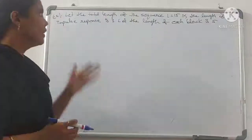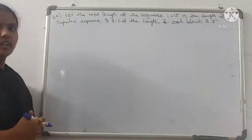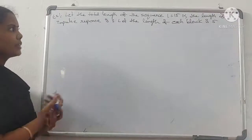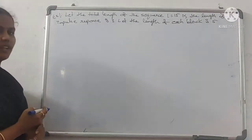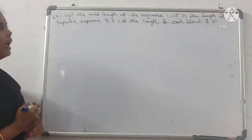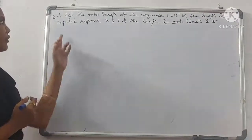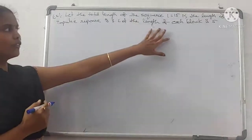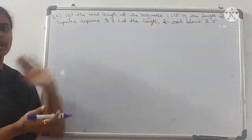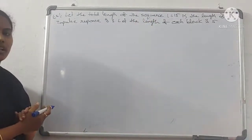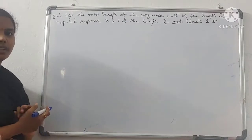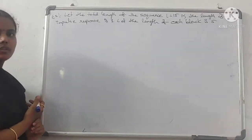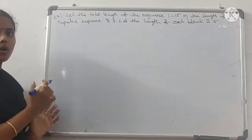Let the total length of the sequence L equal 15, and the length of the impulse response M equal 3. Let the length of each block be 5. Now the input sequence is divided into blocks.